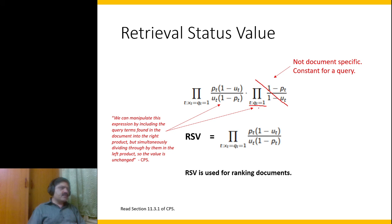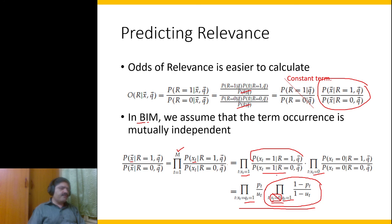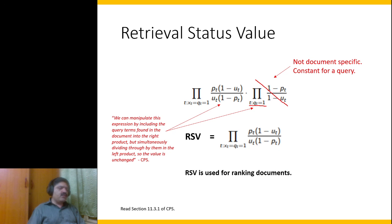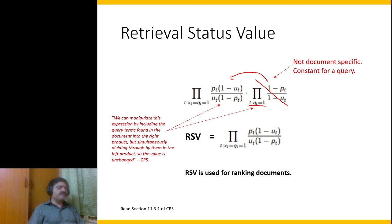The tricky part is the removal of the x_t=0 case. We are not truly removing it — we are manipulating things such that this part is moved to the other side. To move x_t=0 to one side, we divide it from the x_t=1 part. This is called the Retrieval Status Value, which we use in ranking.